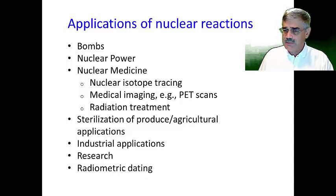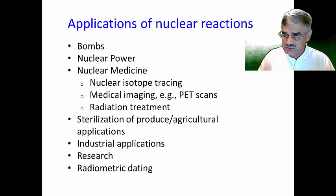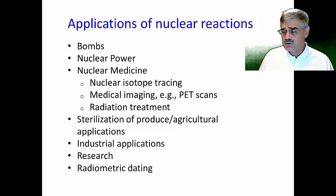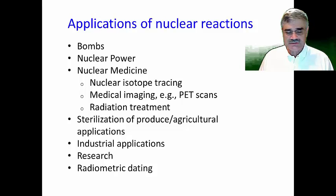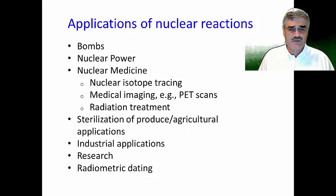We'll talk about how radiation can damage cells and biomolecules, which is the basis for radiation treatment — using radiation to kill cells. Typically this involves a cobalt-60 radiation source directing gamma radiation at a particular tissue, such as cancer tissue, to kill it. Radiation also has agricultural applications, including the sterilization of produce. We showed a photograph of the sterilization of strawberries to prevent mold growth, and this is a common practice in the food industry for certain fruits and vegetables.